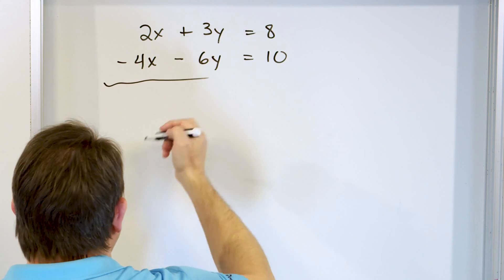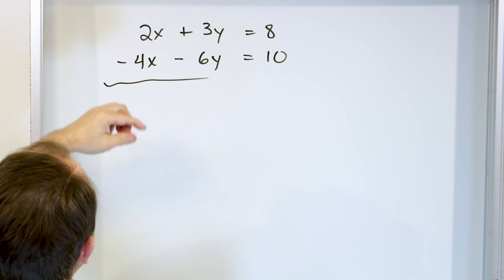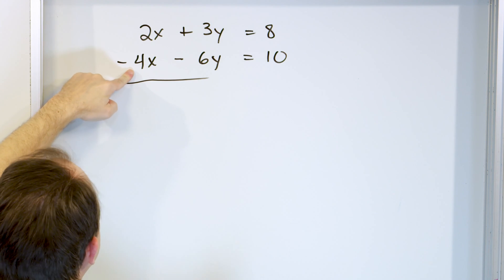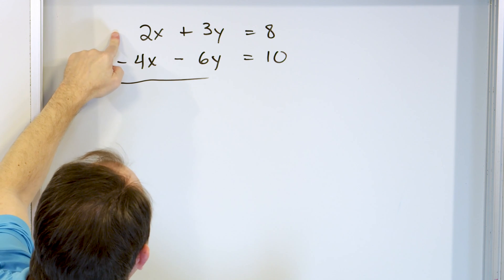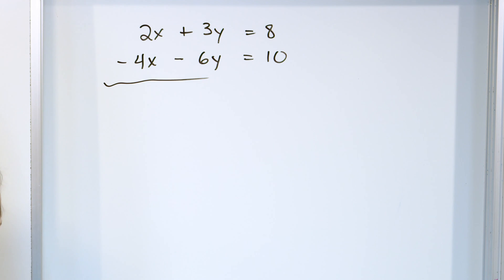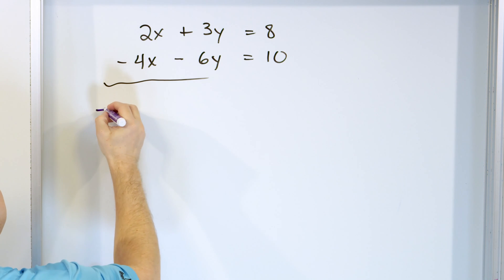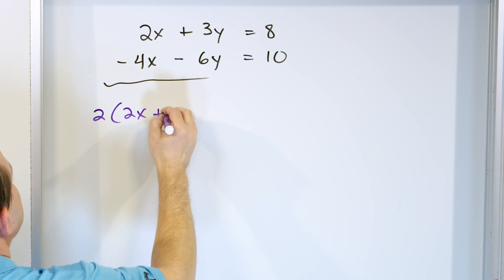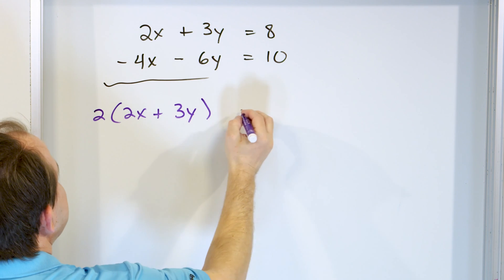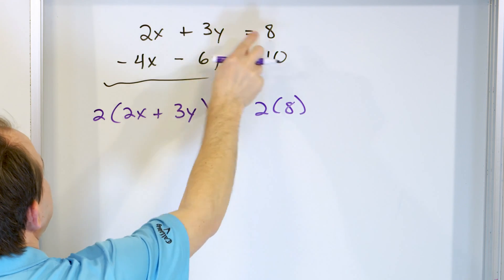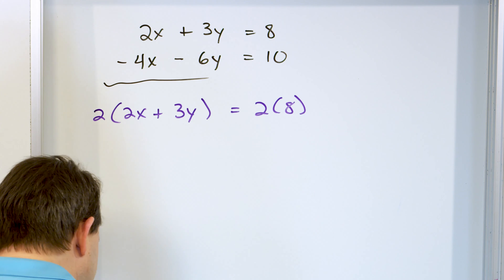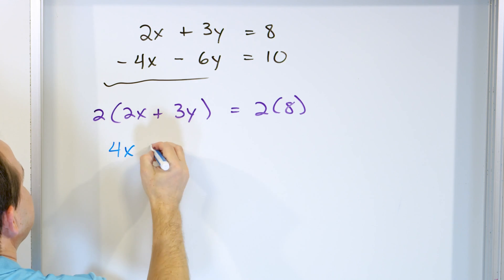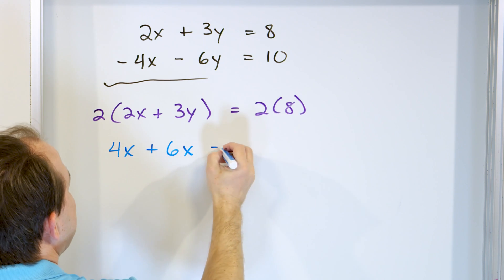We have no idea what this looks like, but we know our choices. If I multiply the first equation by 2, I'll have 4x and be able to cancel with the negative 4x when I add. So let's do that: multiplying positive 2 times 2x plus 3y equals 8. Multiplying both sides by 2, I get 4x on the left, 6y in the middle, and 16 on the right.